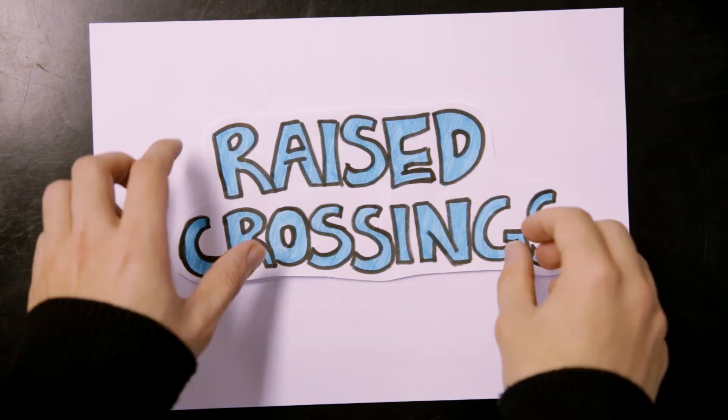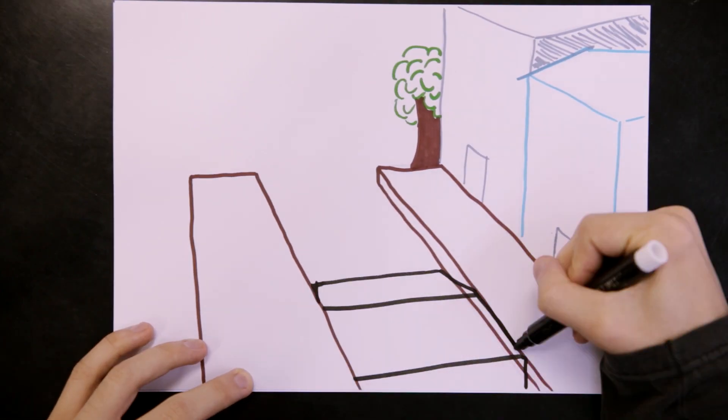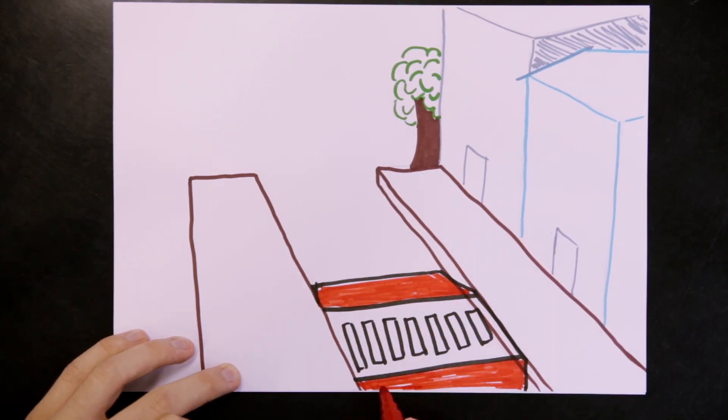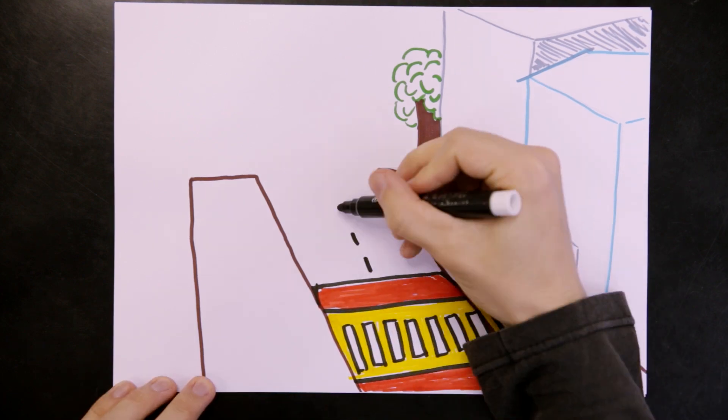Raised crossings. Raised crossings are elevations of the road to the same level as the sidewalk that slow cars at crossings and increase pedestrian visibility.